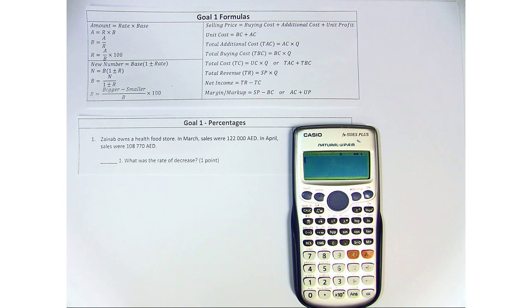Looking at the first question, Zainab owns a health food store. In March, sales were 122,000 dirhams. In April, sales were 108,770 dirhams. What was the rate of decrease?